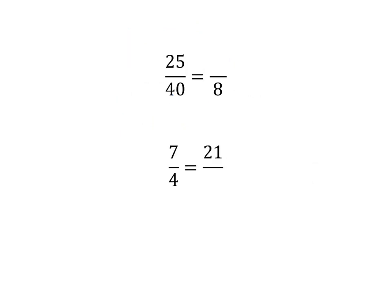I want you to practice this quickly in your homework books — write the answers to these two questions. 40 divided by five gets to eight, so you also divide 25 by five, giving five. Seven times three gets you to 21, so you've also got to take the four and multiply it by three, giving 12 at the bottom.